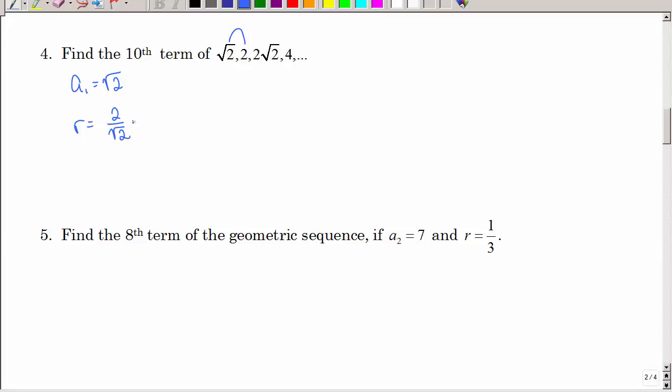That's r. Could I simplify that? Yeah, let's go ahead and rationalize that denominator. I have 2 square root of 2 over 2. So, that's the square root of 2. It may have been easier if I would have taken the next one and said, ah, 2 square root of 2 over 2. So, again, r is the square root of 2. The first term is the square root of 2. And I want the 10th term and that's n.